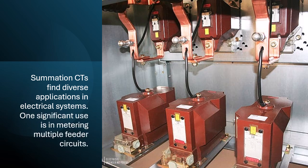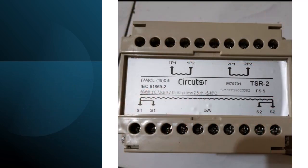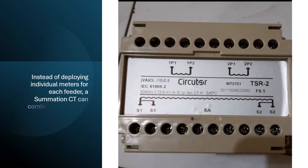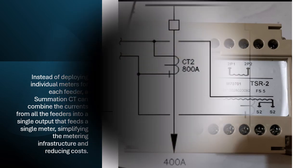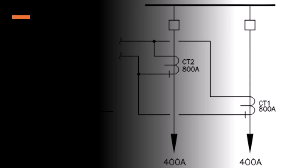One significant use of summation CTs is in metering multiple feeder circuits. Instead of deploying individual meters for each feeder, a summation CT can combine the currents from all the feeders into a single output that feeds a single meter, simplifying the metering infrastructure and reducing costs.